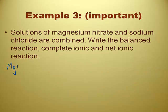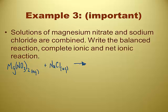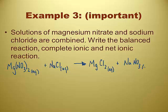Third example: solutions of magnesium nitrate — nitrates are all aqueous — and sodium chloride, because sodium is group 1A, also aqueous. These two are in separate beakers and you pour them together. The products would be magnesium chloride — that's soluble — and sodium nitrate — nitrates are all soluble. Everything is aqueous; there's no precipitate on the right-hand side, no solid. No precipitate means no reaction.